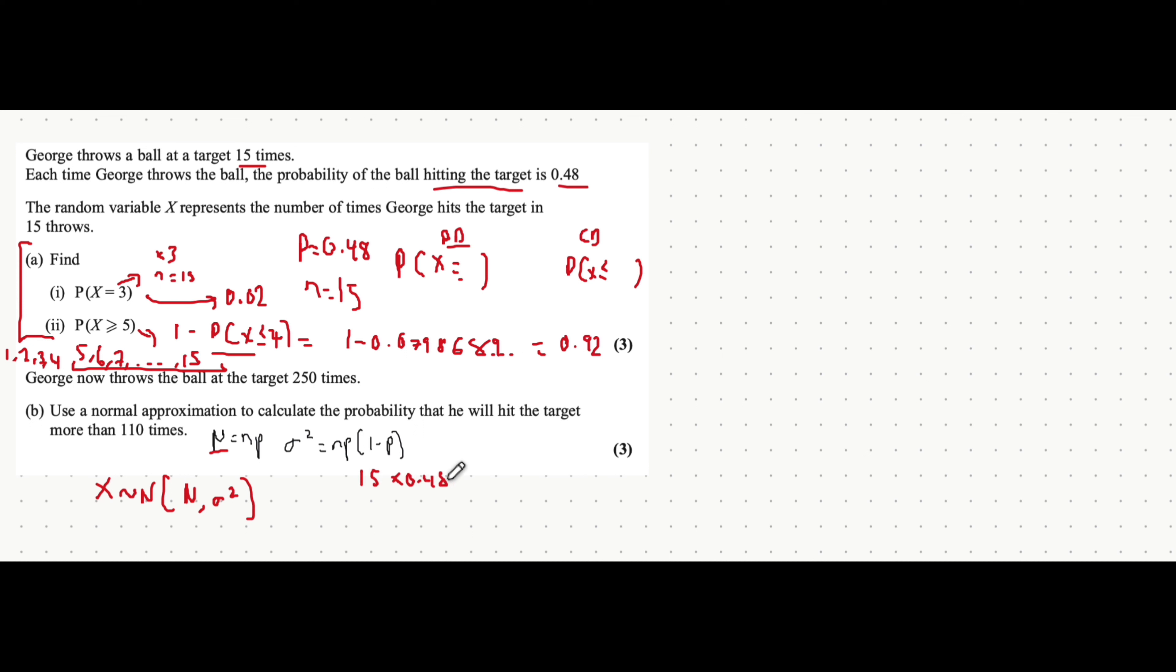15 times 0.48 is equal to... I'm just going to very clearly do that. And by the way, there's two conditions for which you can actually use the normal to approximate the binomial. That is when there's a large sample size, which tends to be double digits. And when the probability is close to 0.5. It tends to be anywhere between 0.35 and 0.65.